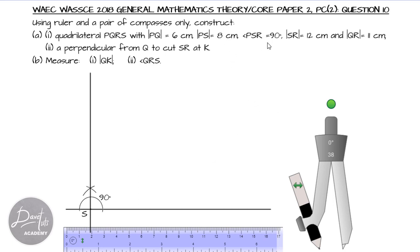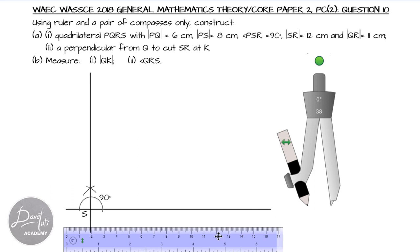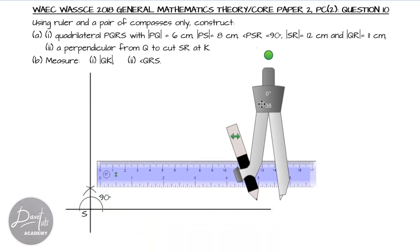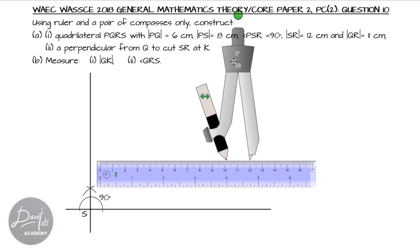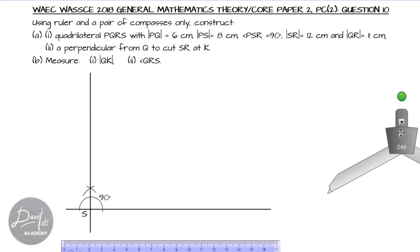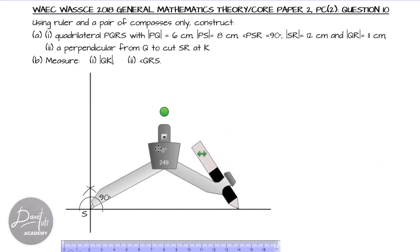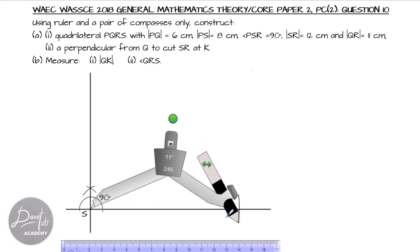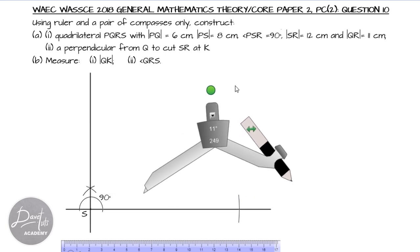So now, since we have been able to get angle PSR, now we can look at PS is 8 cm and SR is 12 cm. Now, let's go with the SR is 12 cm, the larger side. So, from point S, we want to measure 12 cm. If we take our compass to our ruler and we locate 12 and 0 as a mark-off point, we can now go to point S and put the pin of our compass and then cut an arc at the other end. Let's put the point S and cut an arc at the other end, noting that this is 12 cm. So, this is point R, such that our SR is now 12 cm.